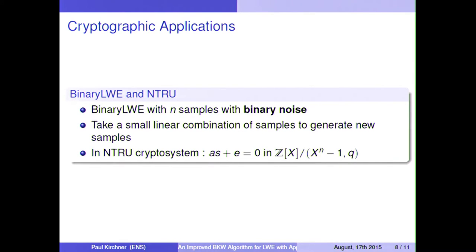Now we can consider another variant of this problem, which is we have only n samples instead of unlimited, but we have binary noise. And the way we can solve this variant is that we take a small linear combination of samples, and we can generate this way a very large number of samples, and we can prove that it works.